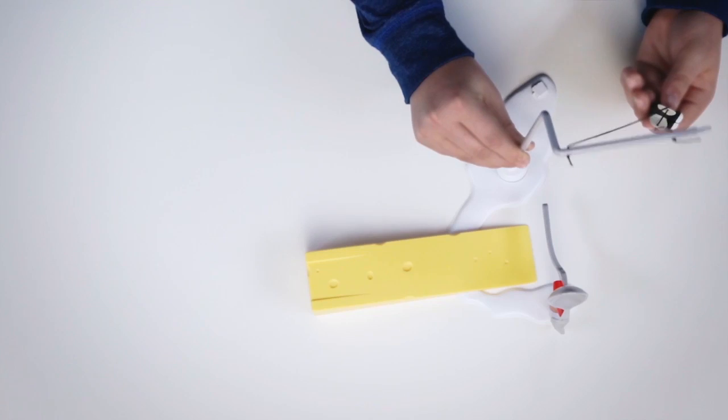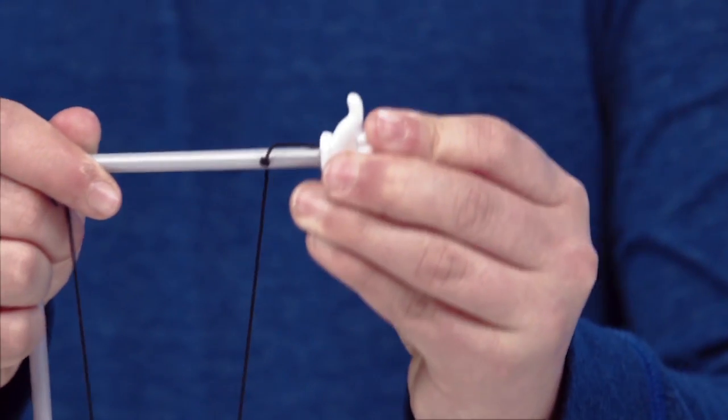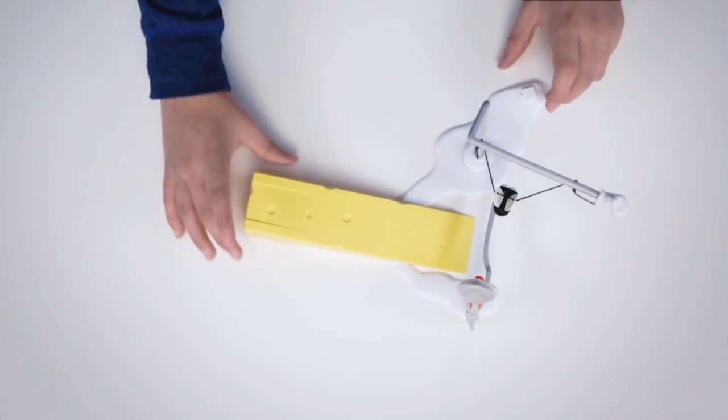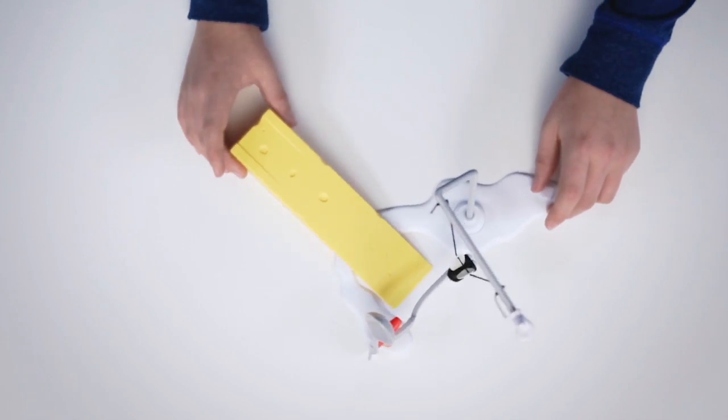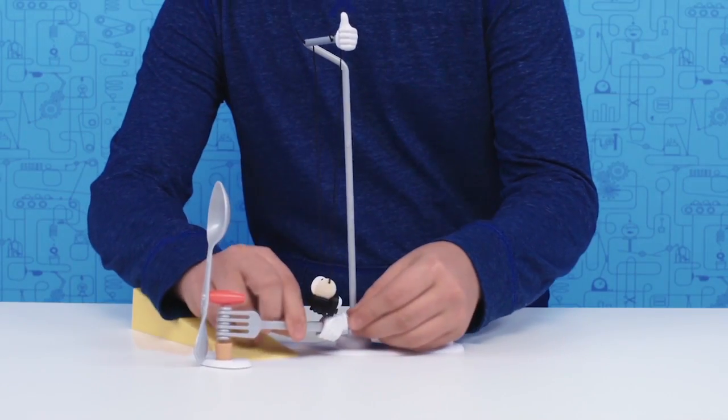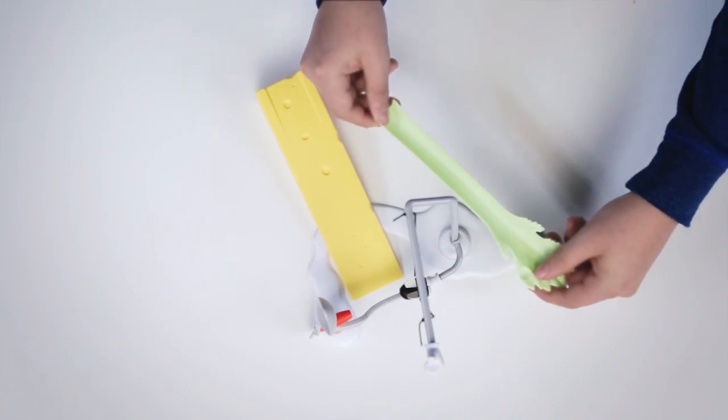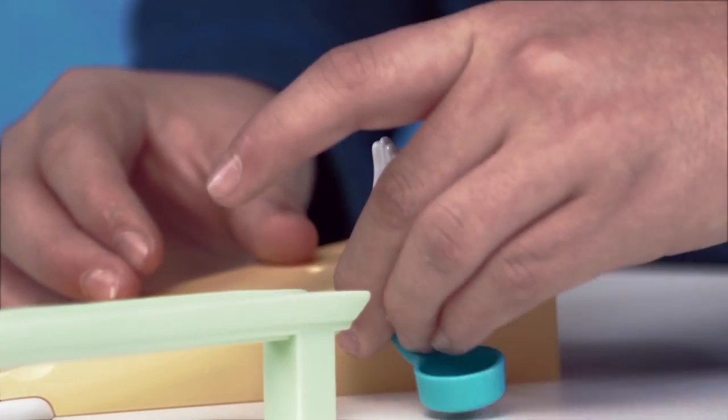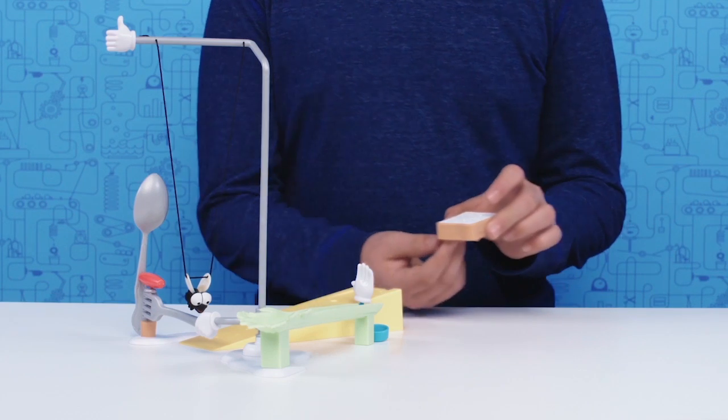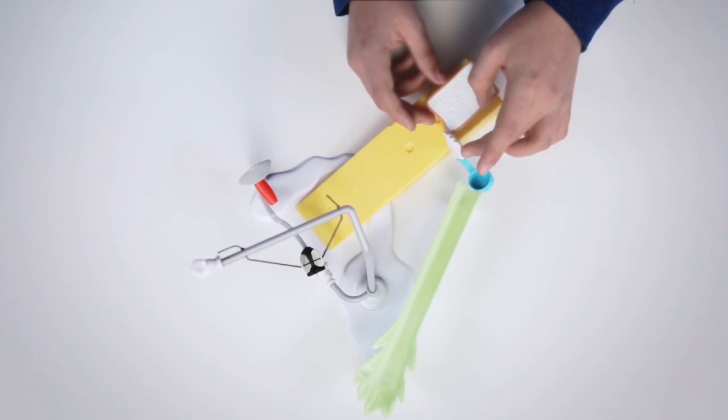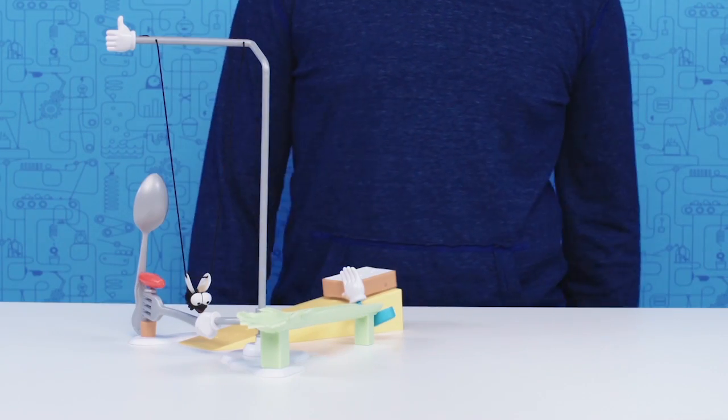Insert the fly pole into the base and attach the thumbs up helping hand on the pole. Attach this helping hand to hold the fork. Now we'll add the celery stock and the helping hand measuring cup to the cheese wedge. Place the bread slice on the cheese wedge ramp and bring the helping hand down to hold it in place.